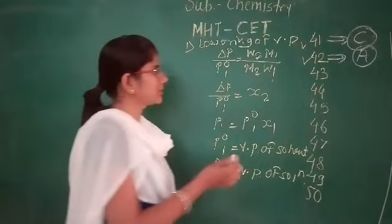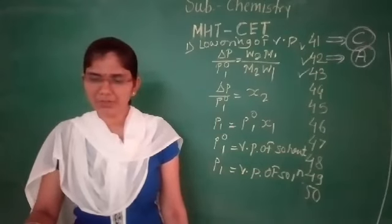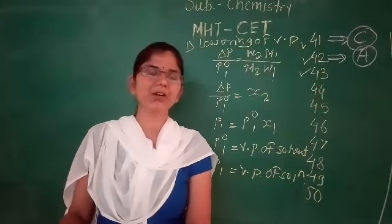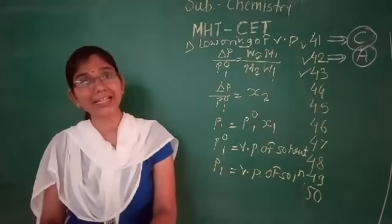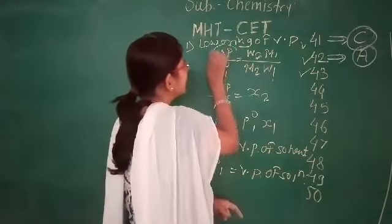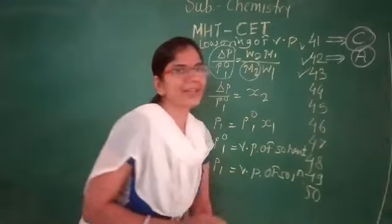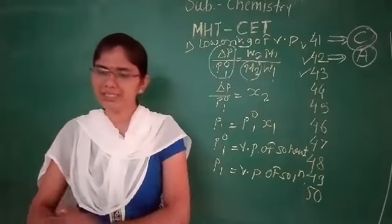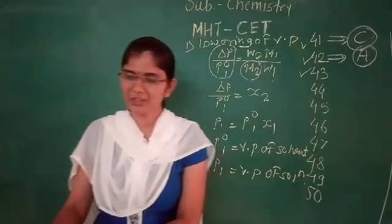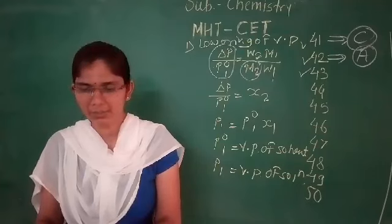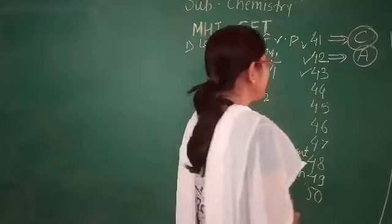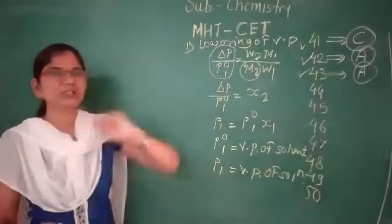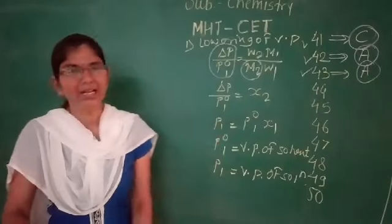Question 43 asks what can be calculated using a colligative property. The four options are: A) molar mass, B) equivalent weight, C) arrangement of molecules, and D) melting and boiling point. The correct option for question 43 is option A — colligative properties are used to determine the molar mass of a solute.